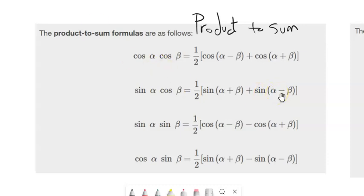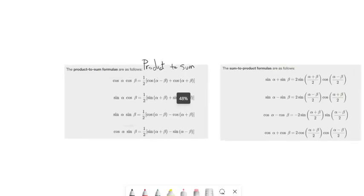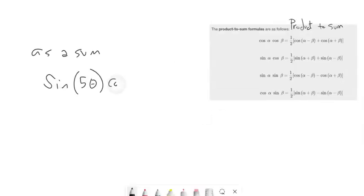Let's practice using these to rewrite some stuff. So here we have a product, sine of something of five theta times cosine of two theta. So sine times cosine. So I'm just going to look over here. Sine times cosine. I notice that that's equal to one-half of sine of them added together plus sine of them subtracted from each other.